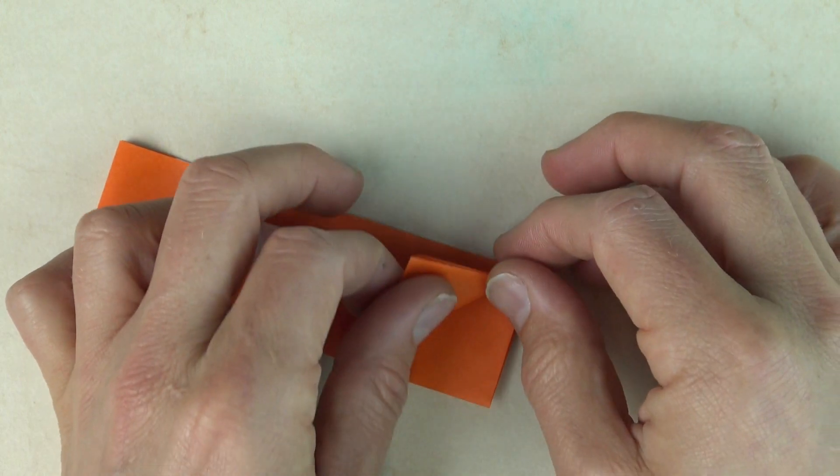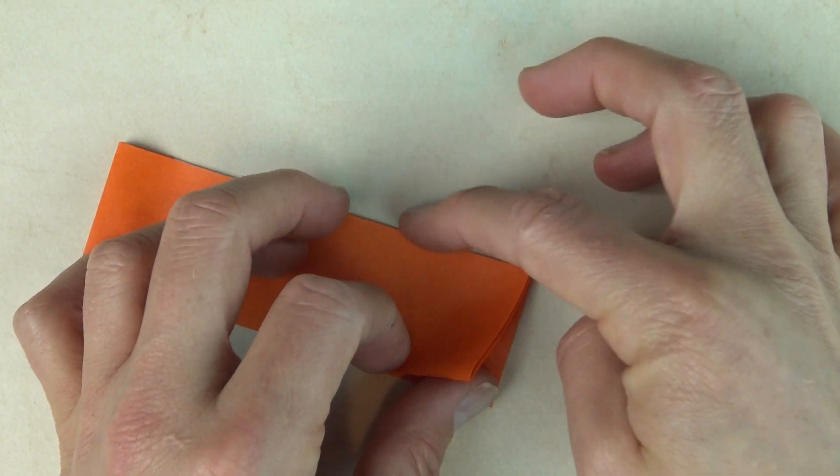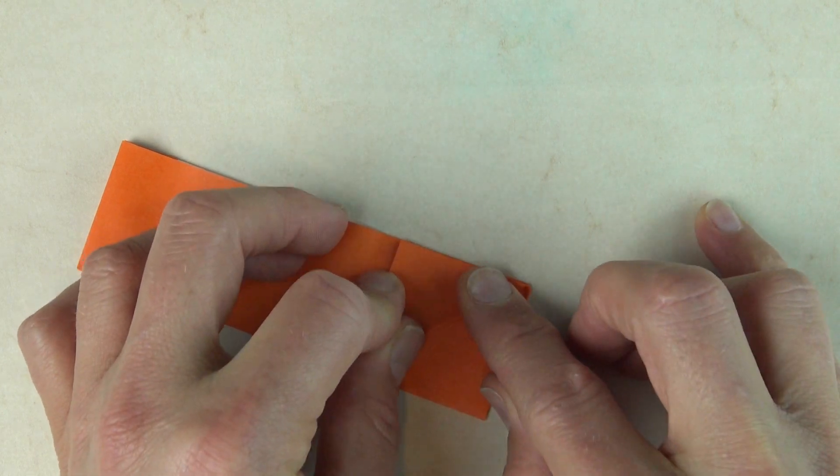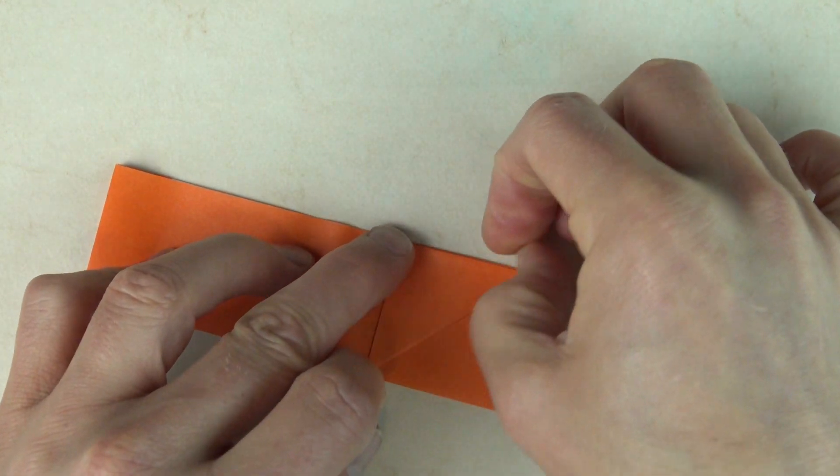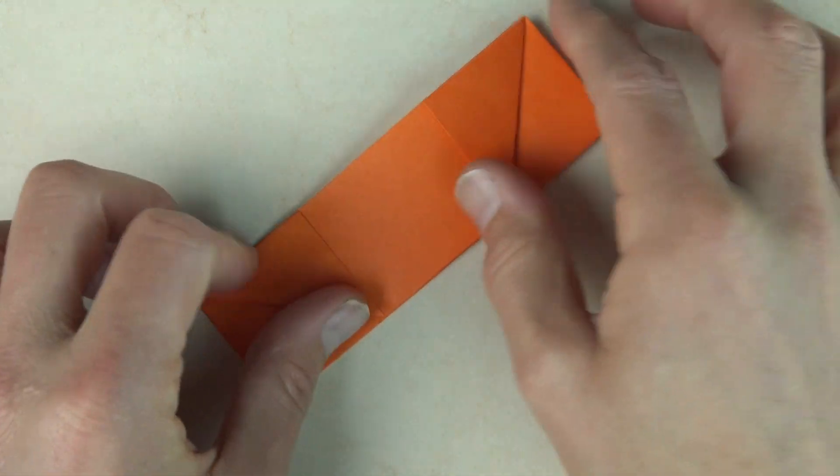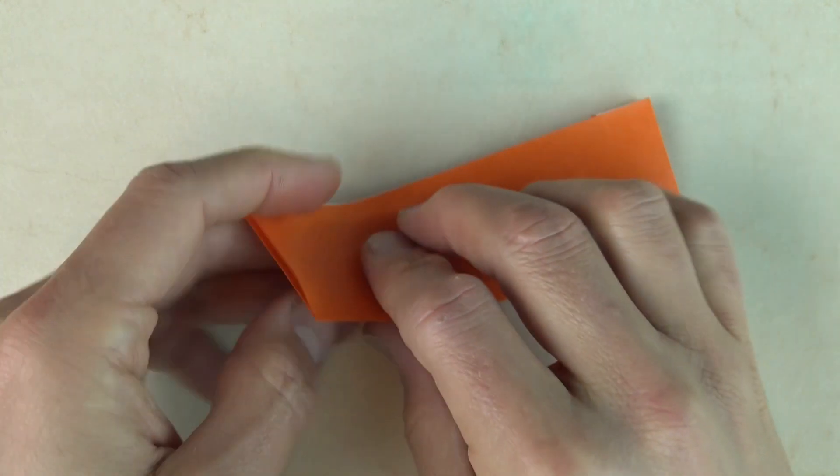Now fold this flap up so that this edge aligns with the top. And repeat. And turn over. And repeat.